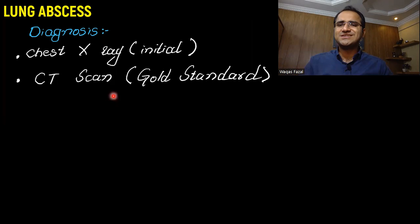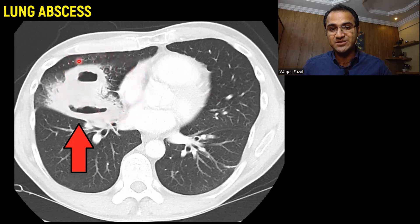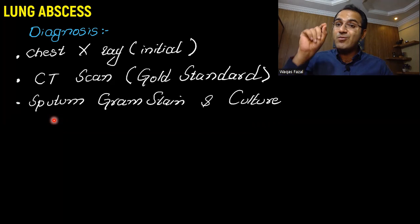CT scan is the gold standard test for the diagnosis of lung abscess. On CT scan, you would see pictures like this showing the abscesses. Other than that, you also obtain sputum cultures — you gram stain the sputum and look for microorganisms so that you can give appropriate antibiotic therapy.